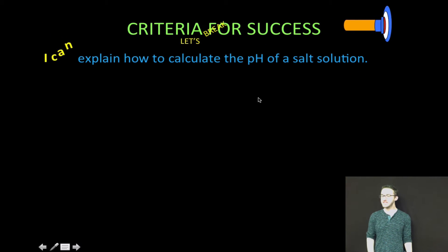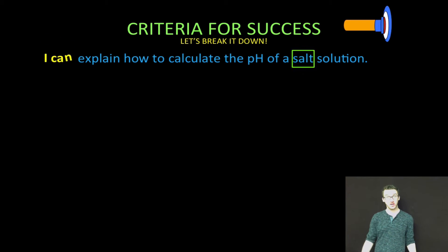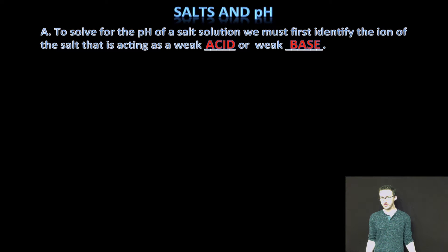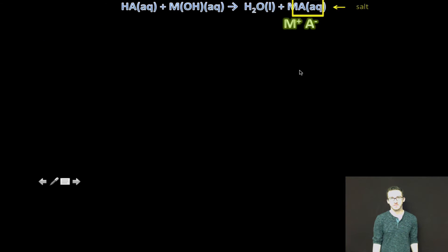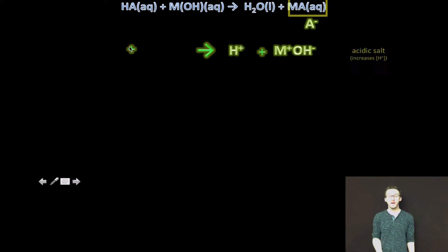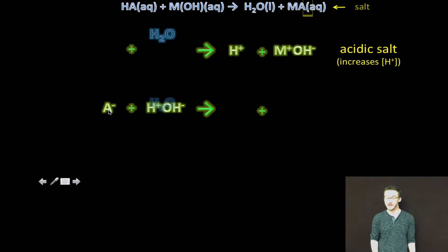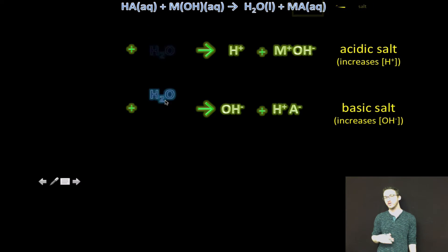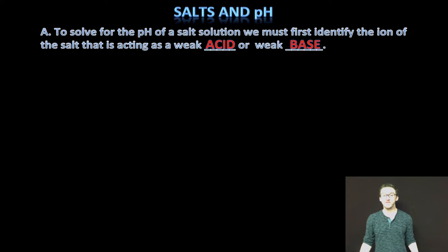Breaking it down. Specifically, we're going to explain how to calculate the pH of a salt solution. All right, to solve for the pH of a salt solution, we must first identify the ion of the salt that is acting as a weak acid or weak base.